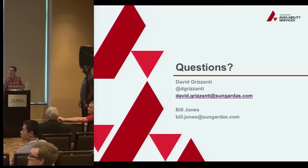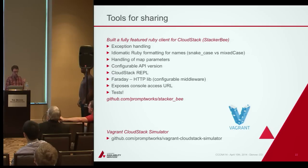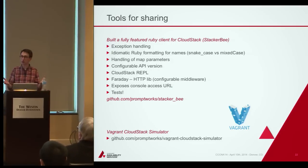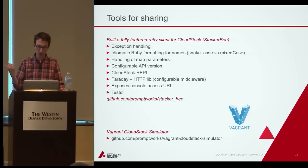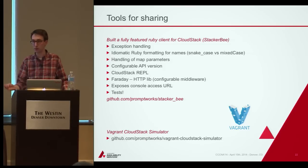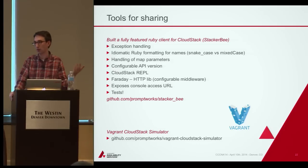On console access: we use StackerBee's console access call, which takes the API and secret key and returns the HTML source for the console. We just render that in a browser window — currently a new tab, but soon to be an iframe.